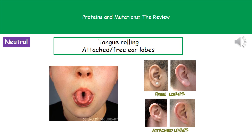Finally, we have what's called a neutral mutation — ones that have neither a benefit nor any particular harmful effect. A couple of examples: the ability to roll your tongue doesn't give you any great benefit in life and certainly isn't harmful. Similarly, having attached or free earlobes is neither beneficial nor harmful — they're just neutral.